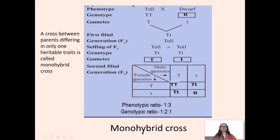Monohybrid cross: 'mono' means single. A cross between parents differing in only one heritable trait is called a monohybrid cross. In this example, phenotype refers to the external appearance of an organism. A tall plant is crossed with a dwarf plant. The genotype for tall is TT and for dwarf is tt. When pure tall (TT) is crossed with pure dwarf (tt), the F1 generation genotype is Tt — a hybrid tall plant.